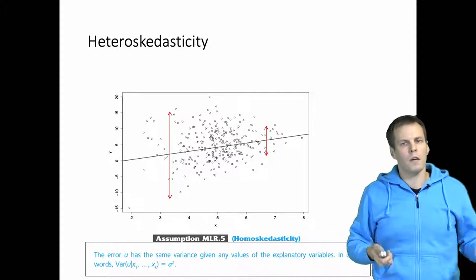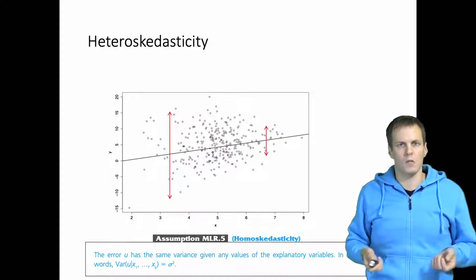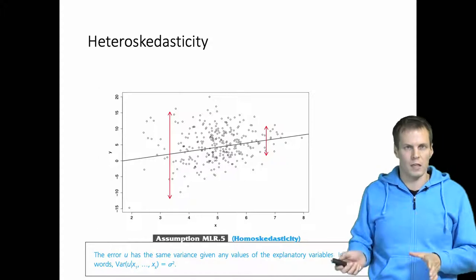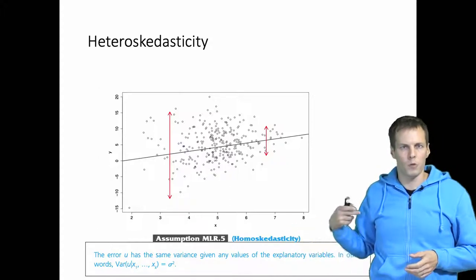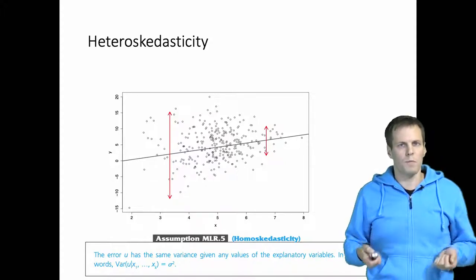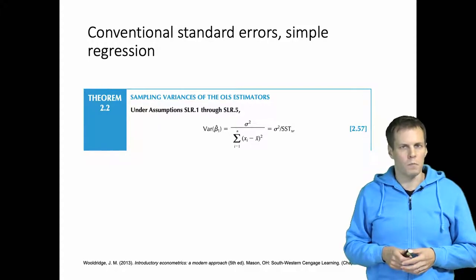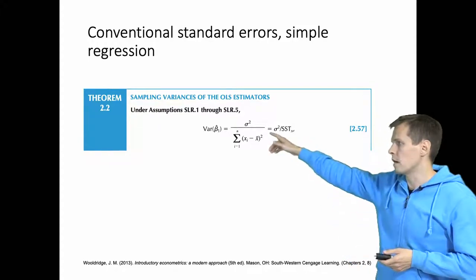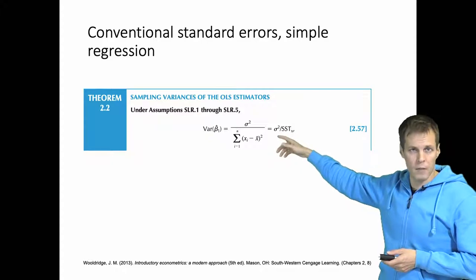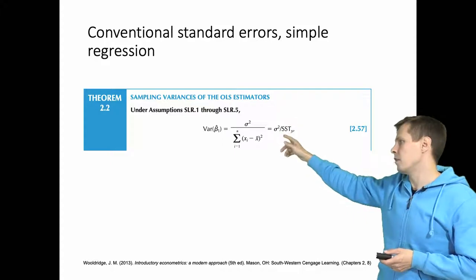This was the fifth assumption in regression analysis and it was required for consistent estimation of the standard errors. If there is a lack of homoscedasticity, or if there is heteroscedasticity in your data, then your conventional standard error equation will produce incorrect results. The conventional standard errors are calculated using this equation — this is the variance of the estimates. We have sigma here, which is simply the variance of the error term. We replace the variance of the error term with the variance of the residuals, which is the estimate of the variance of the error term.